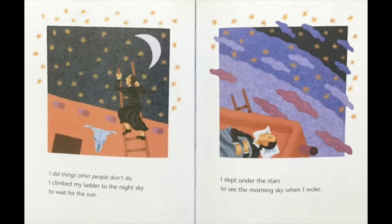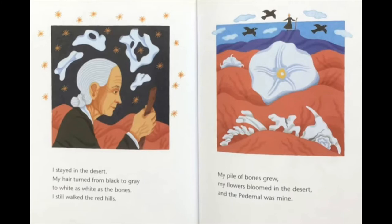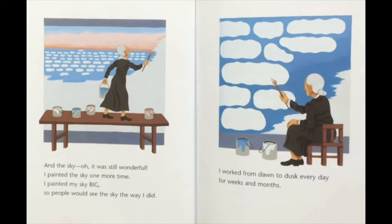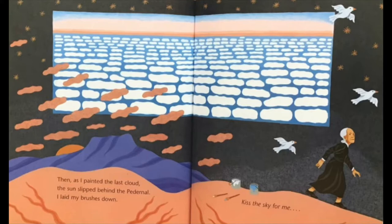'My hair turned from black to gray to white, as white as the bones. I still walked to the red hills. My pile of bones grew. My flowers bloomed in the desert and the paternal was mine. And the sky — oh, it was still wonderful. I painted the sky one more time. I painted my sky big so people would see the sky the way I did. I worked from dawn to dusk every day for weeks and months. And when I painted the last cloud, the sun slipped behind the paternal and I laid my brushes down. Kissed the sky for me.'